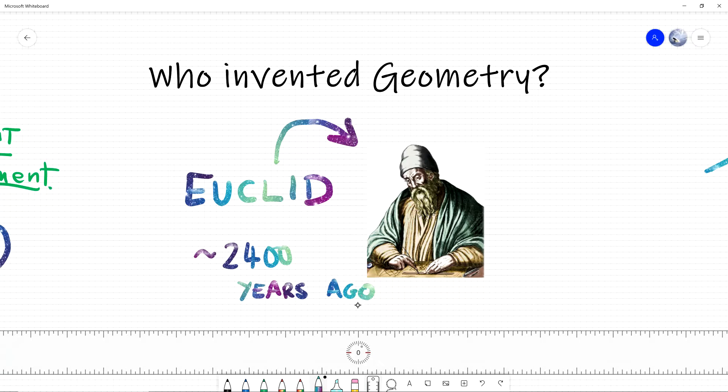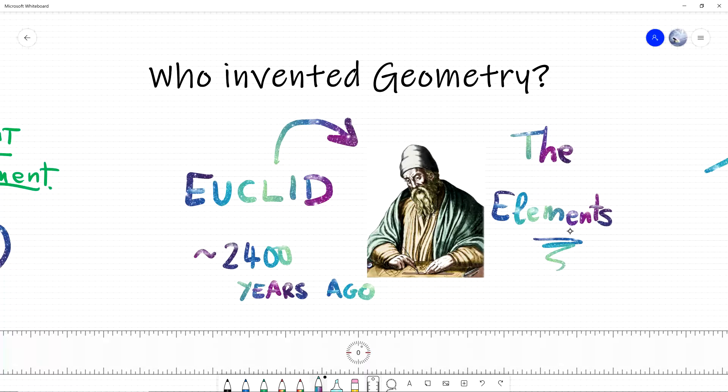Euclid wrote a very important book in geometry called The Elements. The Elements of Euclid was such an important book that it was used for thousands of years. Basically, for 2,000 years, we've been learning from The Elements. And still today, I read The Elements sometimes because it's such an amazing book. So, he wrote a very important book on geometry.